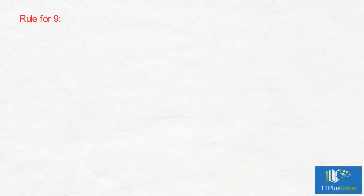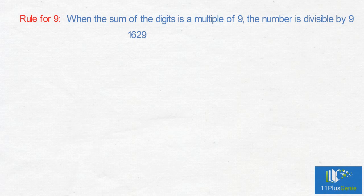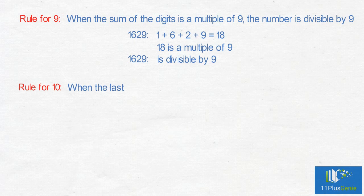Rule for 9: When the sum of the digits is a multiple of 9, the number is divisible by 9. 1,629: 1 add 6 add 2 add 9 equals 18. 18 is a multiple of 9, so 1,629 is divisible by 9.